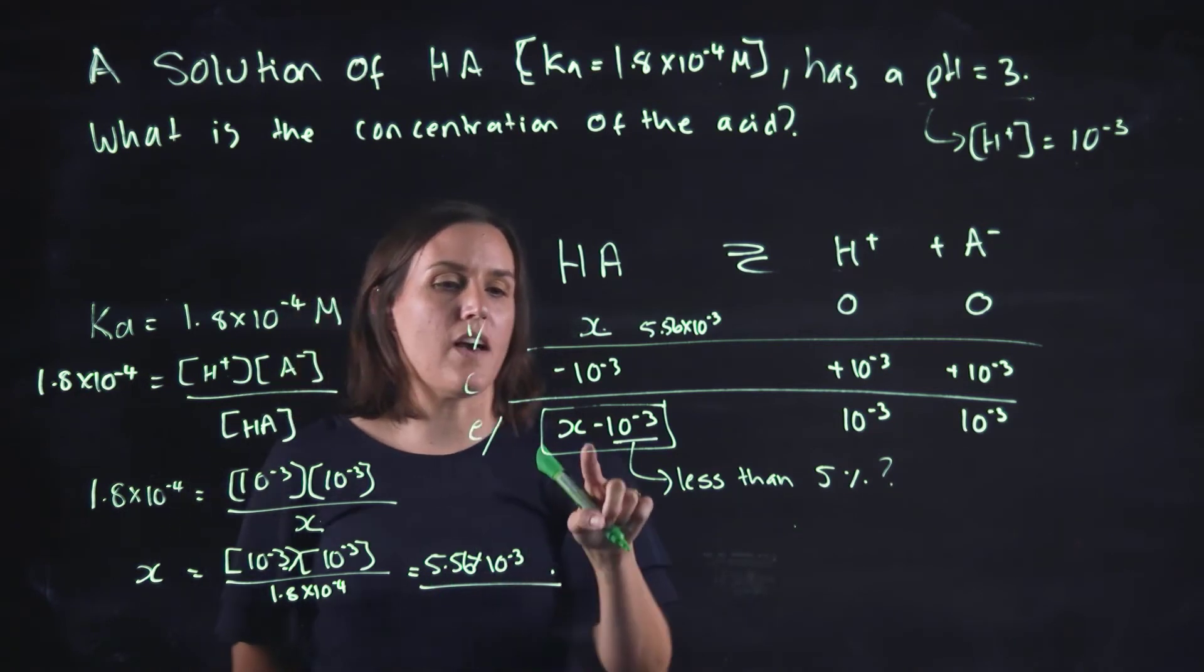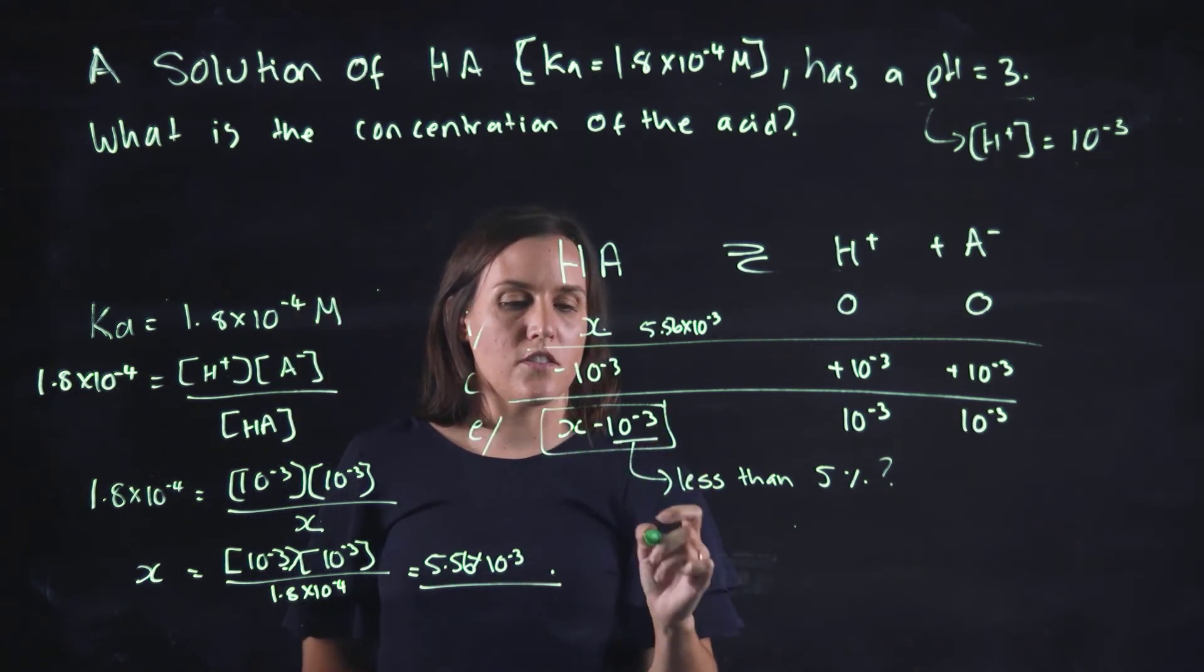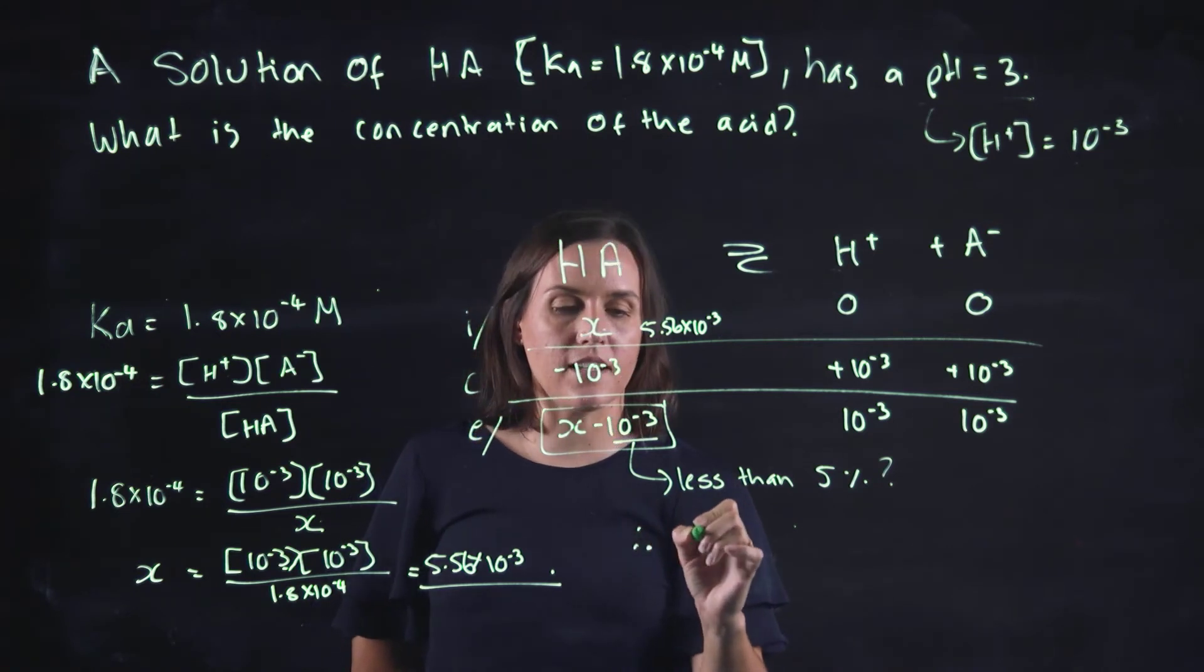So this gives me the value here at equilibrium. So therefore, I can go back and calculate what X is.